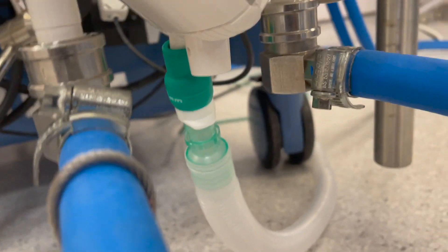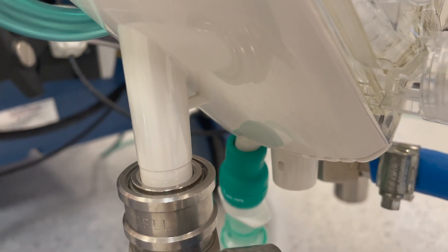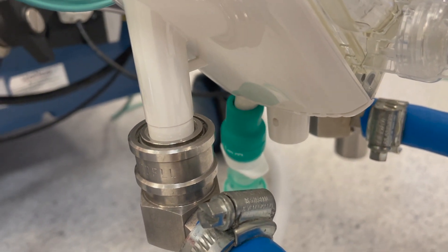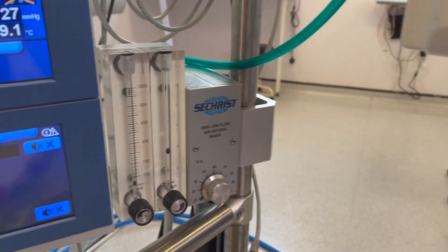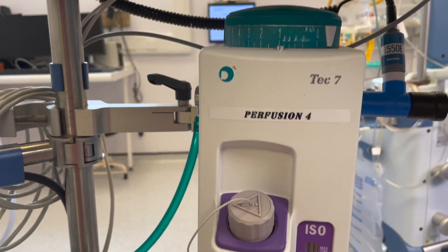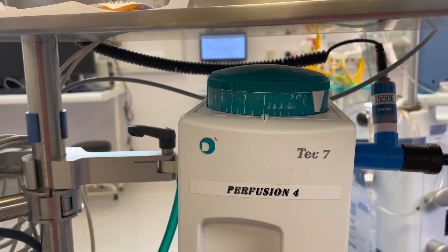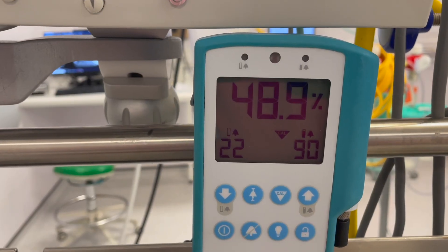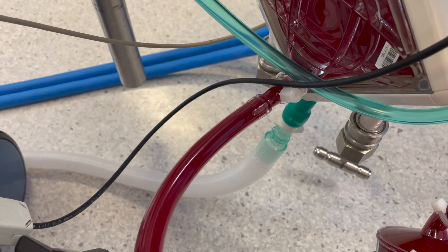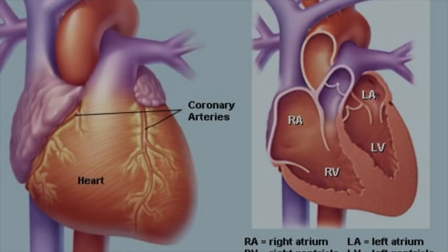Additionally, incorrect mounting on the back bar can result in the loss of sweep gas before it enters the oxygenator, resulting in poor oxygenation and inadequate depth of anesthesia. Reducing occupational exposure to volatile anesthetic agents is recommended during cardiopulmonary bypass. This is done with the scavenging system at the oxygenator gas outlet.